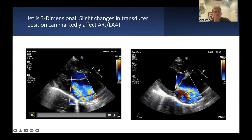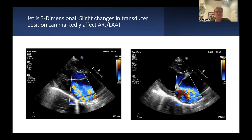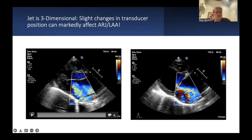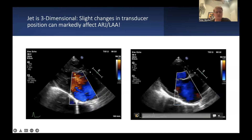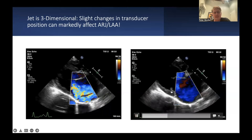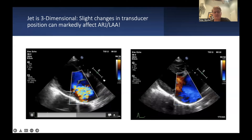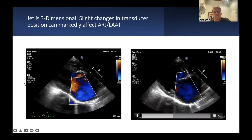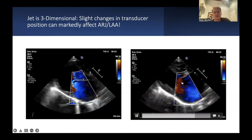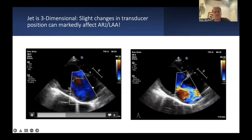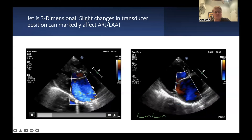What about the probe position? The jet is a three-dimensional thing, so by simply twisting, tilting, or sliding the transducer a little bit, you can get a completely different image of your jet. If you look at these two videos — it's the same dog with a slightly different view — on the left side I simply tilted the probe a little bit, and you see much more color compared to the right side even though all other settings are the same. This is just because the jet is a little bit oblique to the imaging plane.